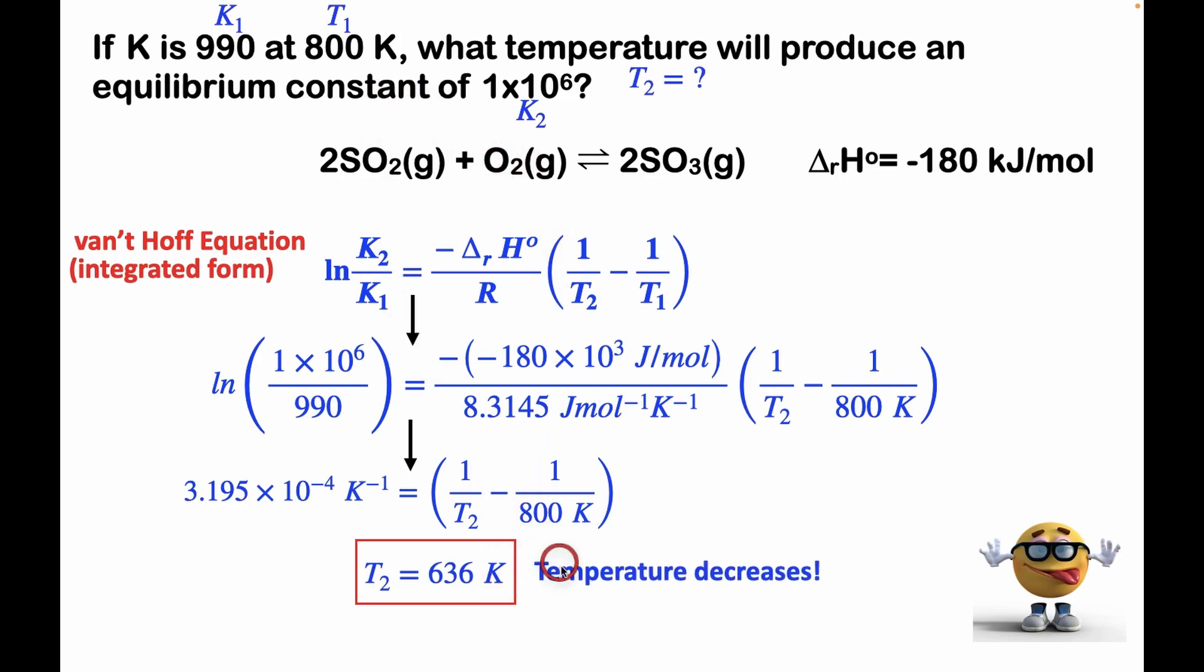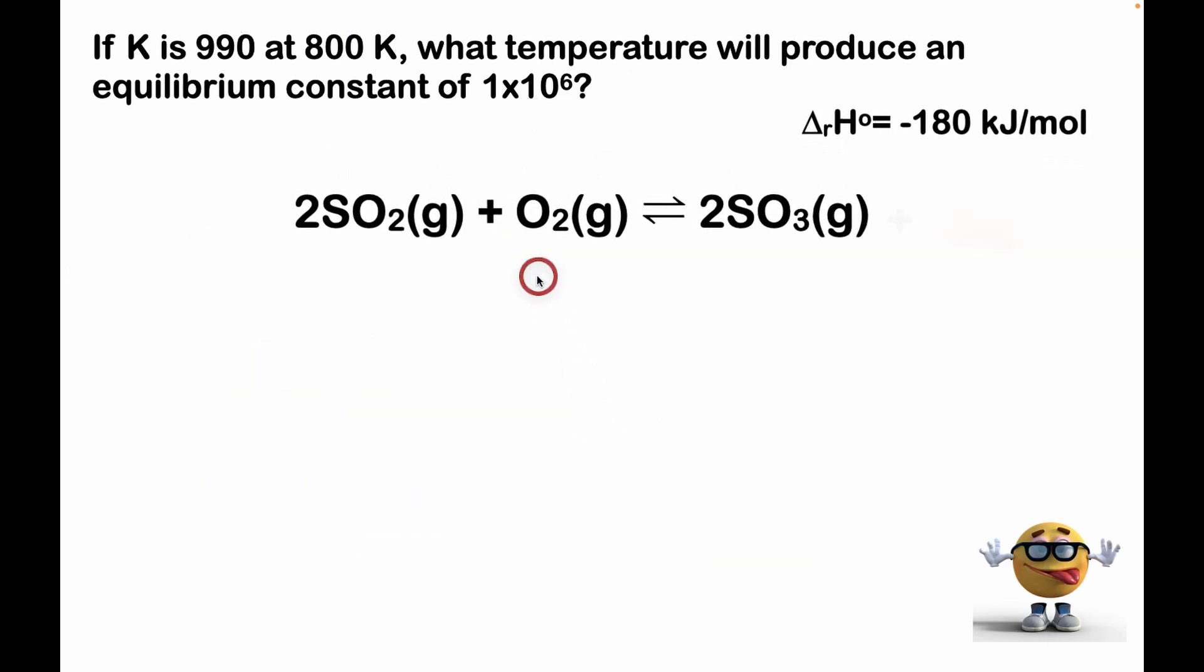It's less. The temperature's decreased. Does that make sense? Well, let's have a look at it. We have this exothermic reaction. It's exothermic because this is negative, which means energy is being released as heat.